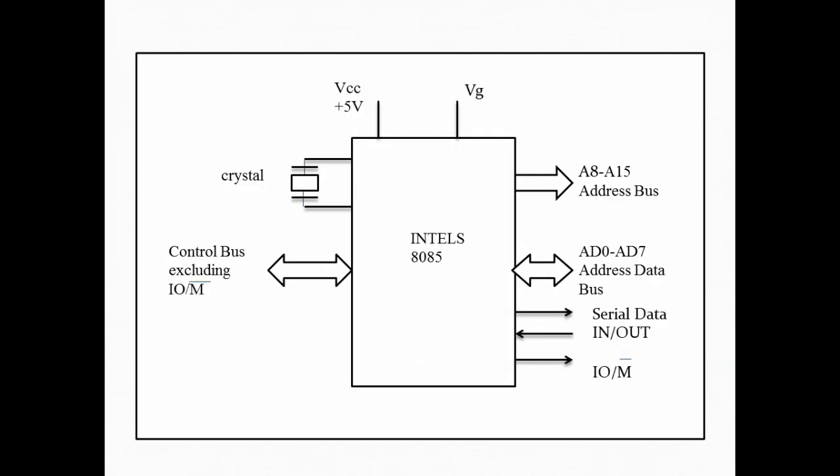So this is a block diagram of Intel's 8085 where I have shown only some important signals like address bus A8 to A15, data bus D0 to D7, serial data in out, I O M bar, the power supply and the ground pin, the crystal for generation of the frequency and the control bus. Now we will understand the features of this 8085 in detail one by one.